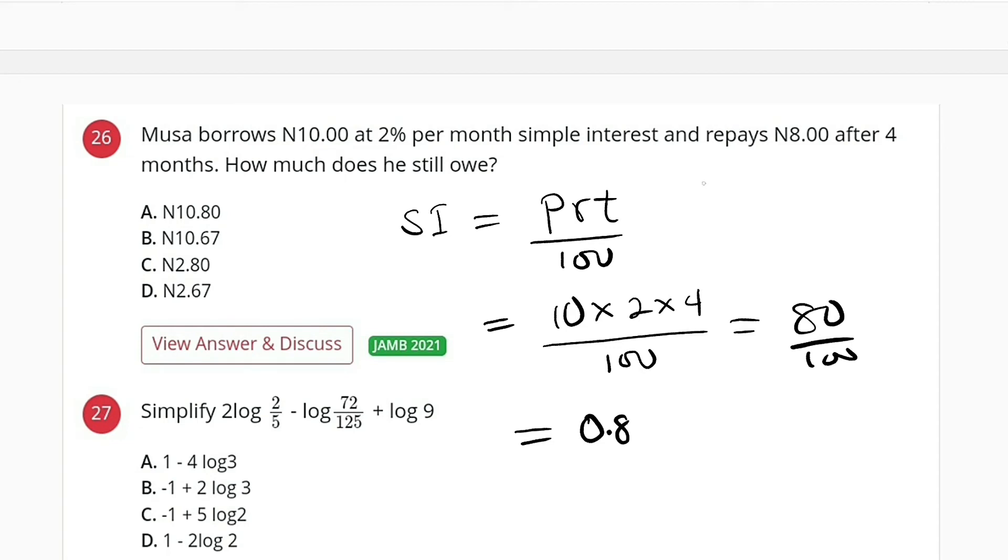So this is the interest, 0.8. Therefore, the amount expected of him to return will be the principal plus the interest. The principal is 10 plus the interest which is 0.8, and this is equal to 10.8. But he repays 8.